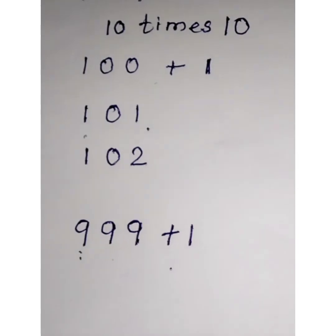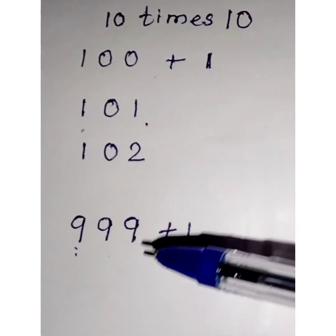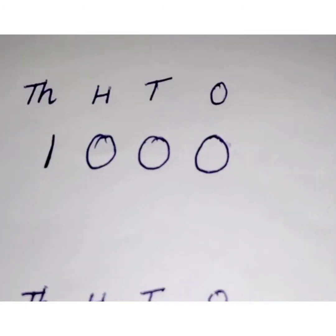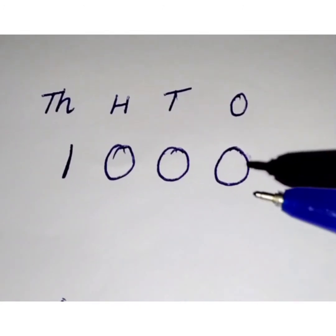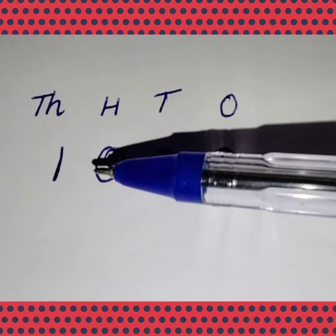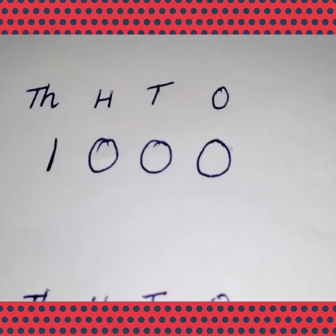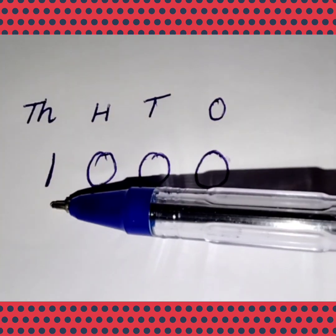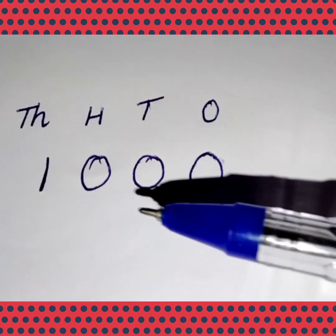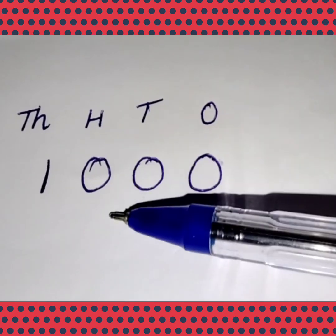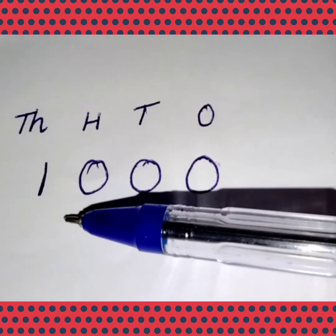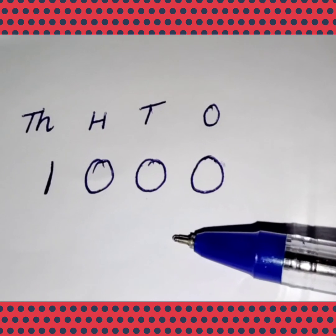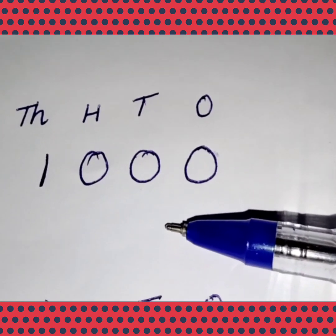Okay. Now, what is after 999? 999 plus 1 will give us 1000 and 1000 is the 4 digit number. 0 in the ones place, 0 in the tens place, 0 in the hundreds place and you can see 1 in the thousands place. That is 1000. And this 1000 is the smallest 4 digit number.